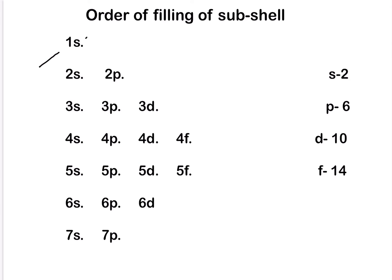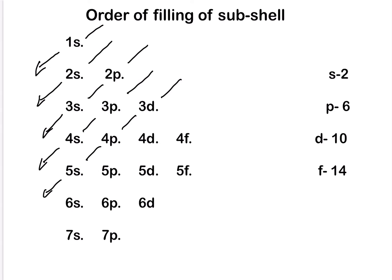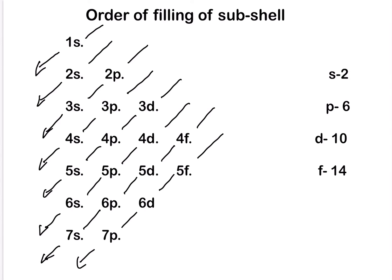You can make a diagonal line showing the order of filling of electrons. First the 1S subshell is filled, then 2S, next 2P, then 3S, 3P, 4S, 3D, 4P, and 5S. Then 4D, 5P, 6S, and then 4F, 5D, 6P, 7S, and 5F, 6D, 7P. So this is the order in which electrons are filled in the subshells.